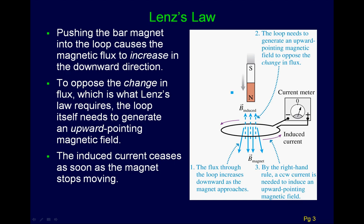Here's an example. We have a bar magnet being moved downwards, so the bar magnet makes this magnetic field. As it goes lower, this magnetic field grows, so the flux downward increases — nature induces a magnetic field going upwards to try to cancel out that change in flux.